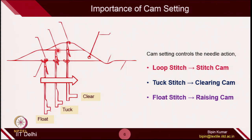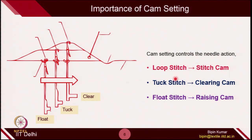For tuck, the needle rises but does not clear the old loop with the help of clearing cam, and then it catches the new yarn. In the next course, it releases both the tuck loop and held loop simultaneously. For the clear position, the needle rises fully — only possible when it hits the rising cam and clearing cam together in sequence — and then makes the normal loop stitch.